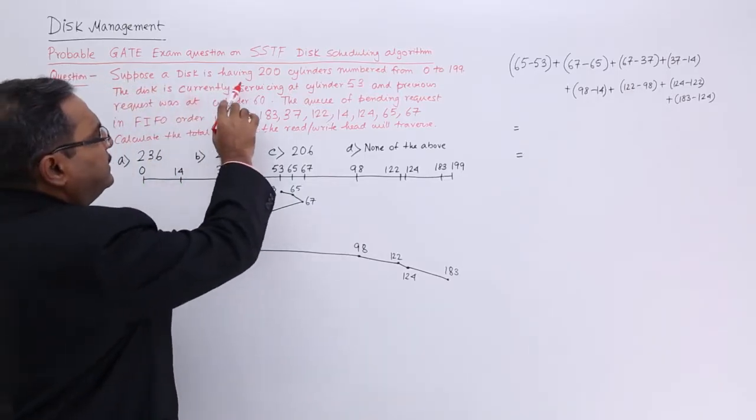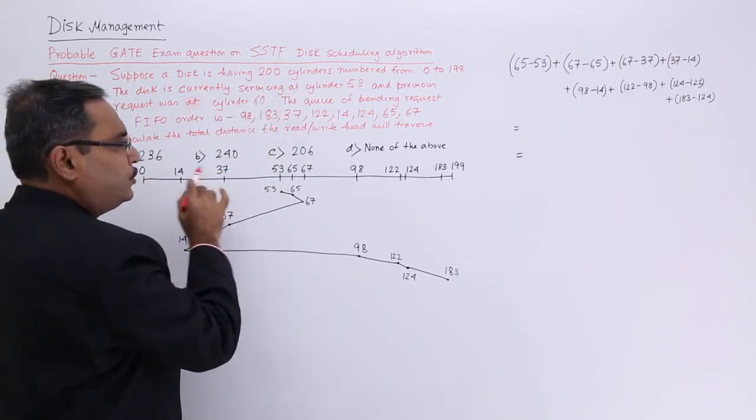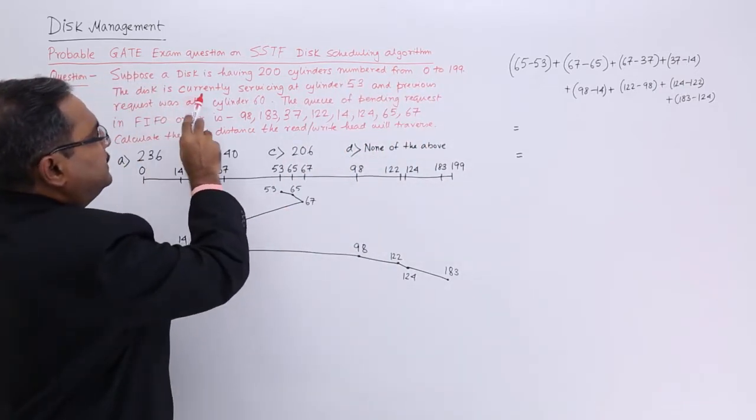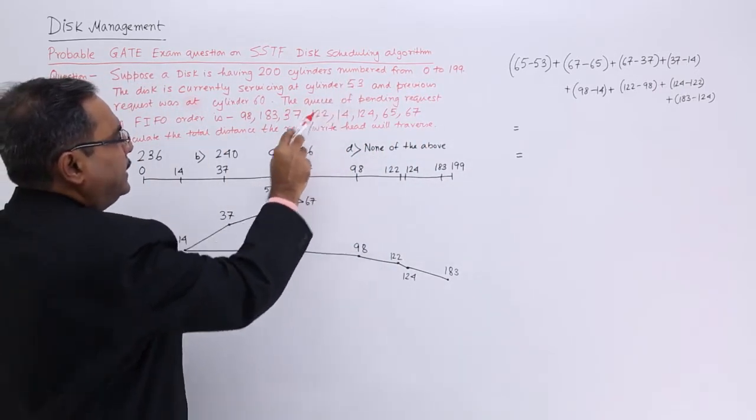Now suppose a disk is having 200 cylinders, so 0 to 199 will be the values. The disk is currently servicing at cylinder number 53.